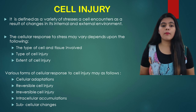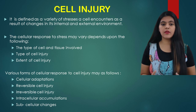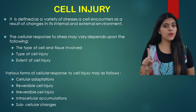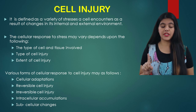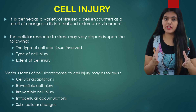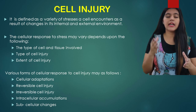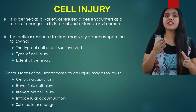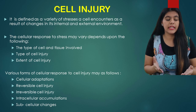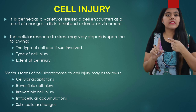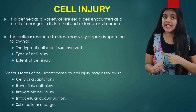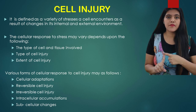Various forms of cellular responses to cellular injury may follow. The first one is cellular adaptation. When there is an increase in the functional demand, a cell may tend to adapt to the changes which are expressed morphologically. For example, atrophy — that is, a reduction in the size and the number of cells.